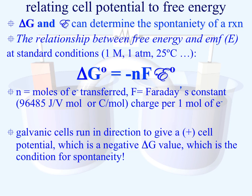These components allow us to relate free energy to cell potential. Cells — both voltaic and galvanic — run in the direction that gives a positive cell potential. A positive cell potential mathematically gives us a negative delta G value, which is the condition for spontaneity. So we can look at E° and figure out if we have a spontaneous reaction.